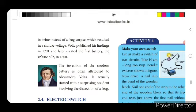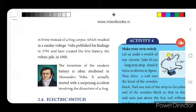Volta repeated the experiment using cloth soaked in brine instead of a frog corpse, which resulted in a similar voltage. He published his findings in 1791 and later created the first battery in the year 1800. The invention of the modern battery is often attributed to Alessandro Volta — it actually started with a surprising accident involving the dissection of a frog. We will continue this lesson in the next class. Thank you.